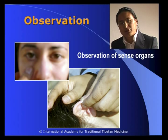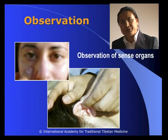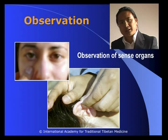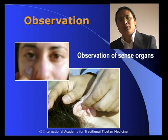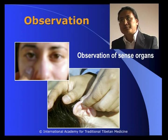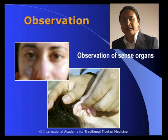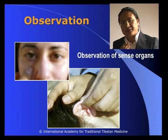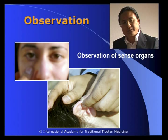This interdependent connection is very important. In Tibetan medicine it is mentioned that the liver is the root of the eyes, so through the eyes we can clearly see the condition of the liver. The ears are considered the flowers of the kidneys, and through the ears we can see the conditions of the kidneys. Therefore, sense organ reading is very important in Tibetan medicine.